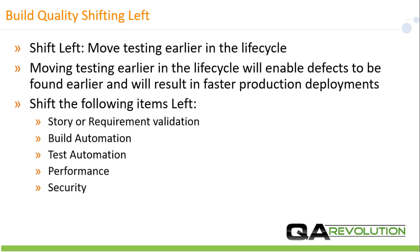Another important item within DevOps is to shift left. What does shift left mean? It means moving testing early in the lifecycle, and this will enable defects to be found earlier and will result in faster production deployments. You can shift the following items left: story or requirement validation, build automation, test automation, performance, and security.